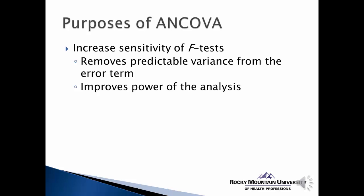When we have covariates, that error term becomes larger than we want it to be, and we end up with a smaller F-score and therefore less likelihood of rejecting the null. So if we can remove that effect of the covariate from the error term, that error term becomes smaller, which improves the power of the analysis — in other words, our ability to see a statistically significant difference.